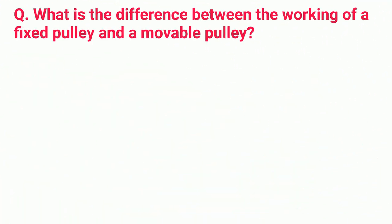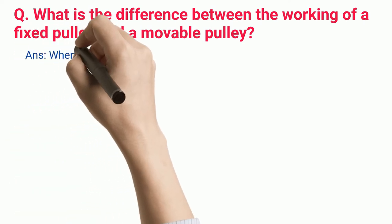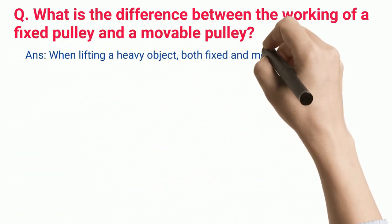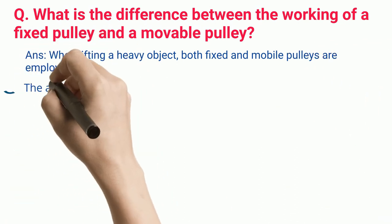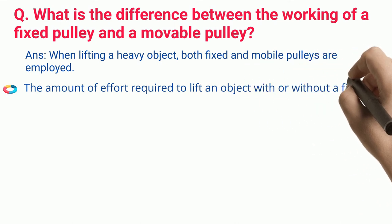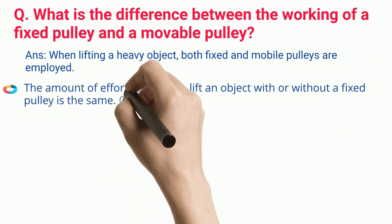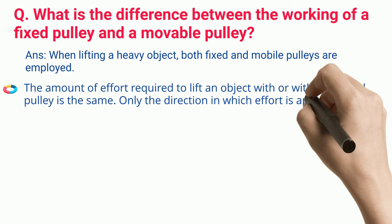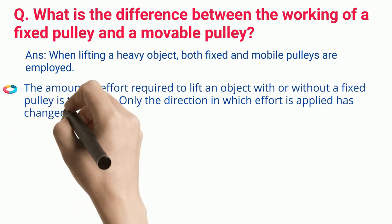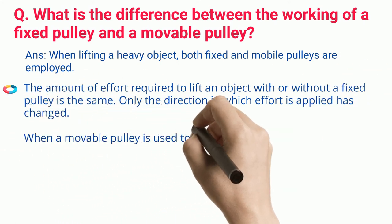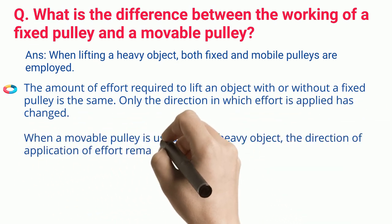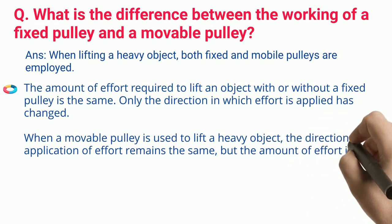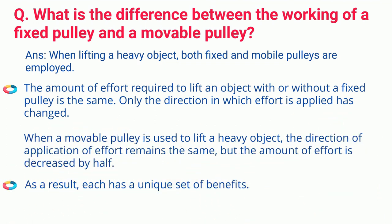Compound pulleys can be seen in sailboats and elevators. Q. What is the difference between the working of a fixed pulley and a movable pulley? When lifting a heavy object, both fixed and mobile pulleys are employed. The amount of effort required to lift an object with or without a fixed pulley is the same; only the direction in which effort is applied has changed. When a movable pulley is used to lift a heavy object, the direction of application of effort remains the same, but the amount of effort is decreased by half. As a result, each has a unique set of benefits.